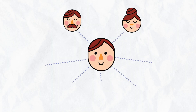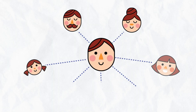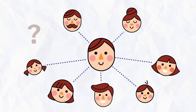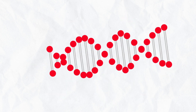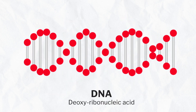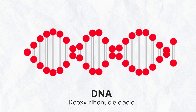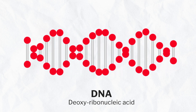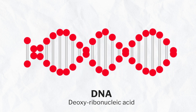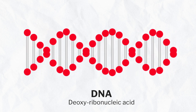Have you ever wondered why you look like your parents or siblings? Why is it that all your family members have facial and behavioral similarities? The secret behind this is DNA. DNA, or deoxyribonucleic acid, is the hereditary material that carries information from one generation to another.